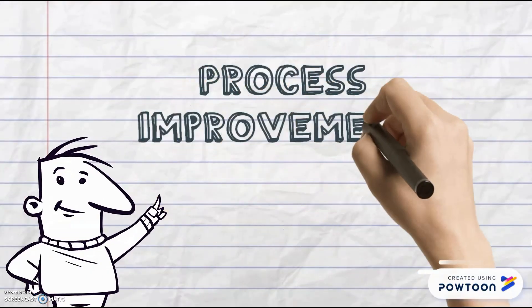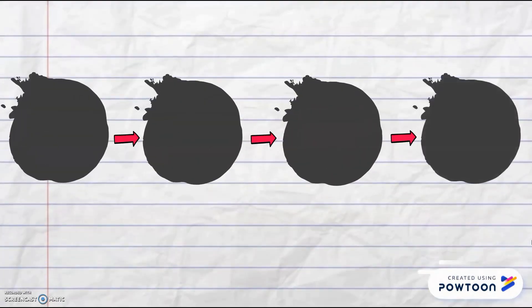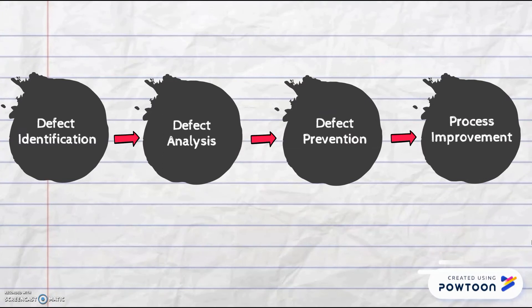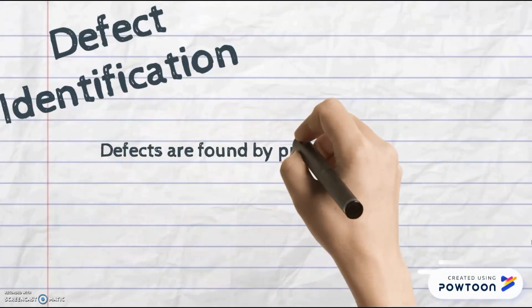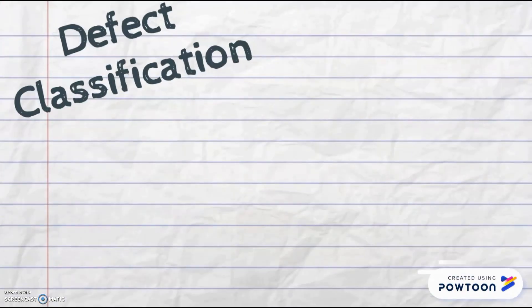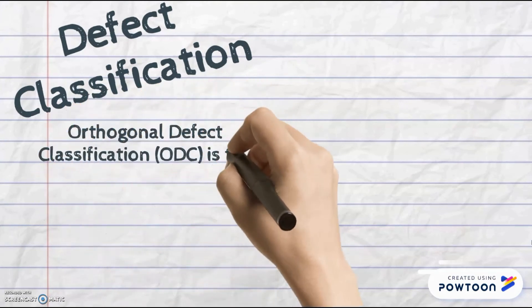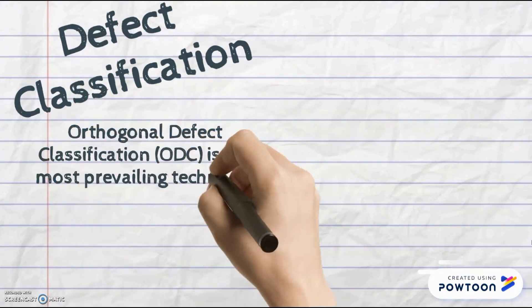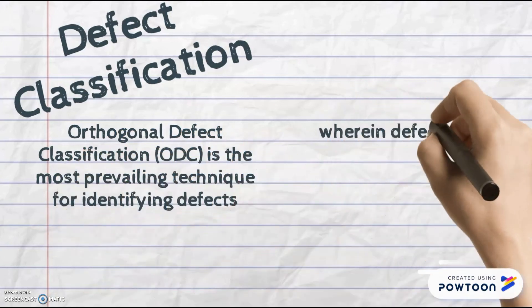Let's move on to the process improvement workflow. There are four phases. The knowledge of defect-injecting methods and processes enables defect prevention, and once this knowledge is practiced, quality is improved. The first phase is defect identification, in which defects are found by pre-planned activities specifically intended to uncover defects. The second phase is defect classification. Orthogonal defect classification is the most prevailing technique, wherein defects are grouped into types rather than considered independently.